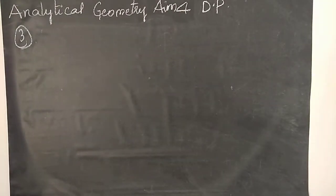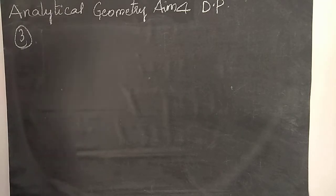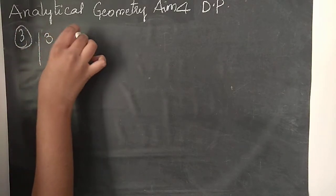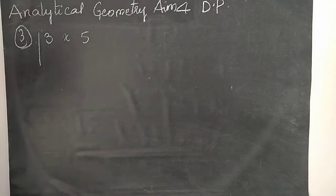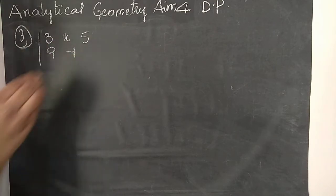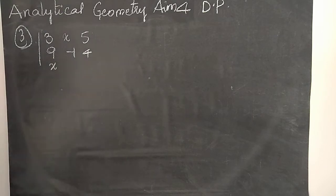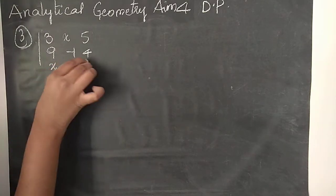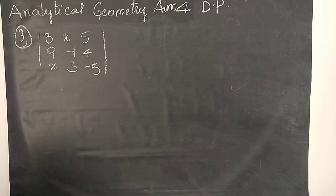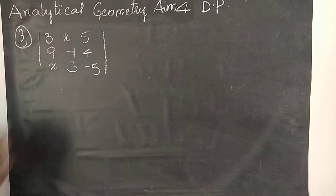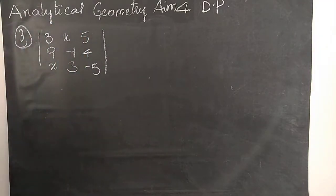Next is the third question. So we have to find the value of x. The question is the determinant: 3, x, 5 and 9, minus 1, 4 and x, 3, minus 5. Same variable x means x has one value only.